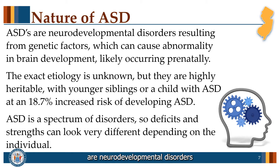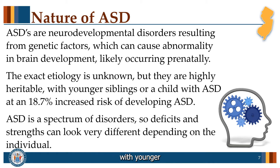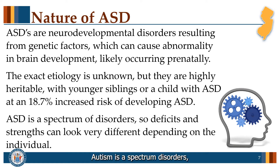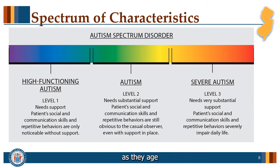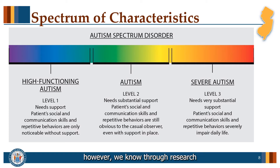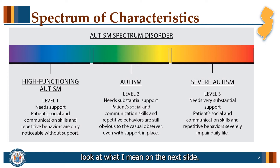Autism spectrum disorders are neurodevelopmental disorders resulting from genetic factors, which can cause abnormality in brain development, likely occurring prenatally. The exact etiology is unknown, but they are highly heritable, with younger siblings of a child with ASD at an 18.7% increased risk of developing autism. Autism is a spectrum of disorders, so deficits and strengths can look very different depending on the individual. The symptoms follow along a continuum ranging from mild to severe, affecting each individual differently, and can vary as they age. While the word continuum is used, this does not refer to a linear approach — through research and observing individuals, we know the continuum is in fact not linear.